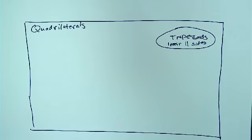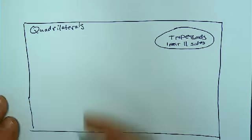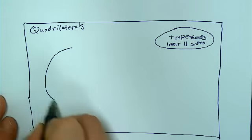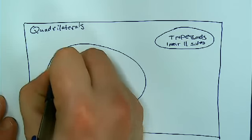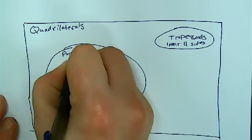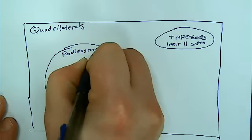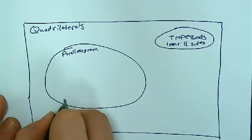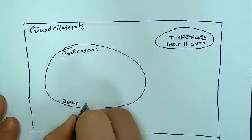And then we had two more types of quadrilaterals. We had parallelograms. And that was having two pair of parallel sides.